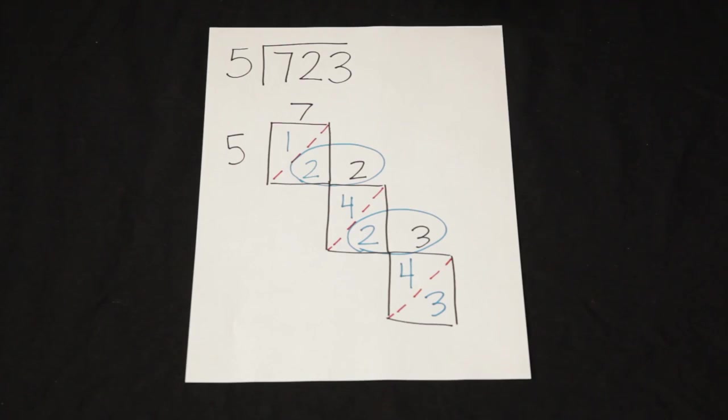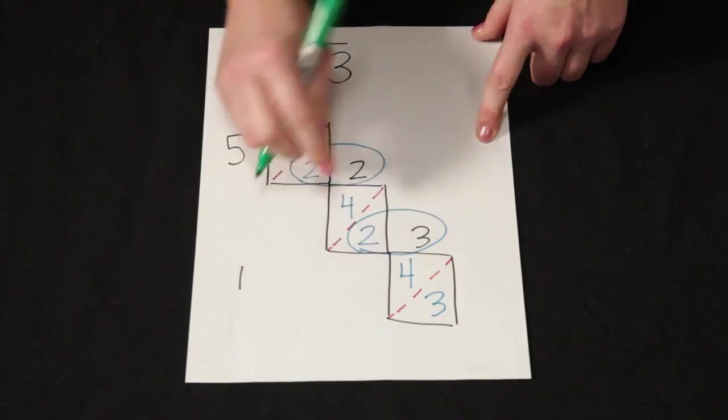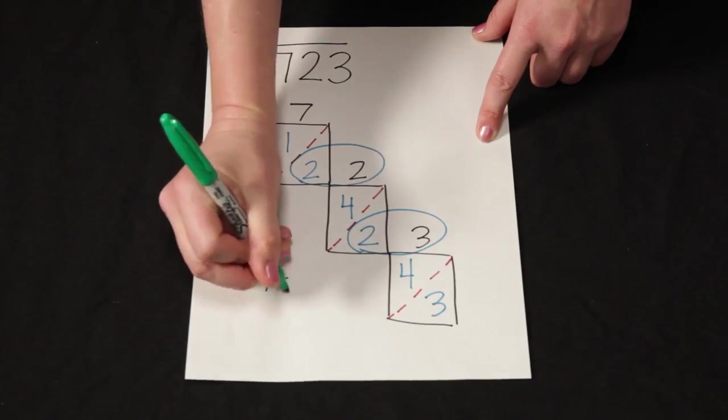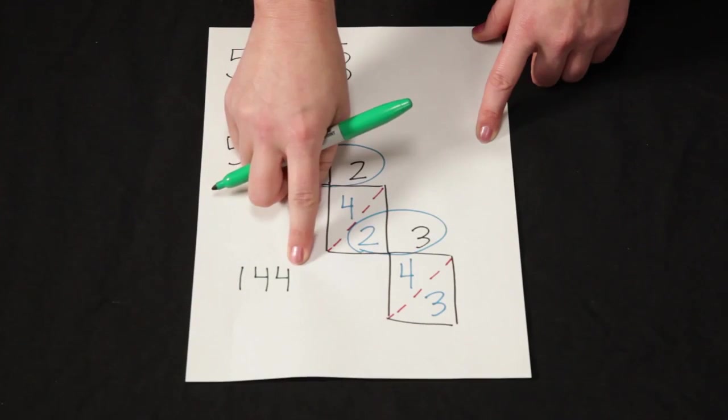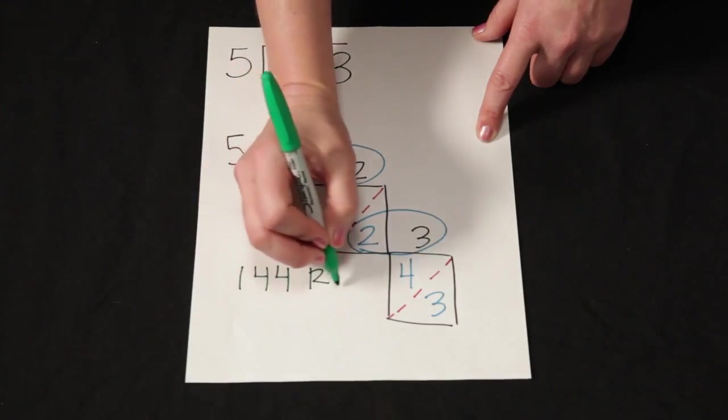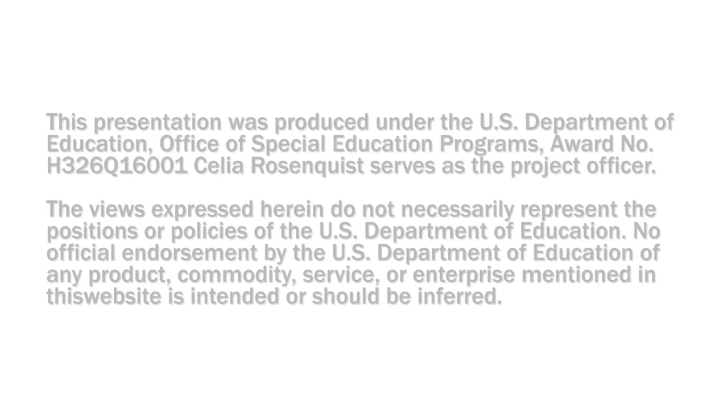So then I can look in the top part of my lattice for my answer. So I have a 1 here, a 4 here, and a 4 here. So my answer is 144, but I can't forget this. I have a remainder of 3.